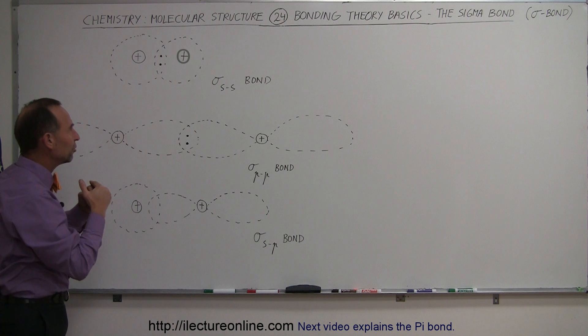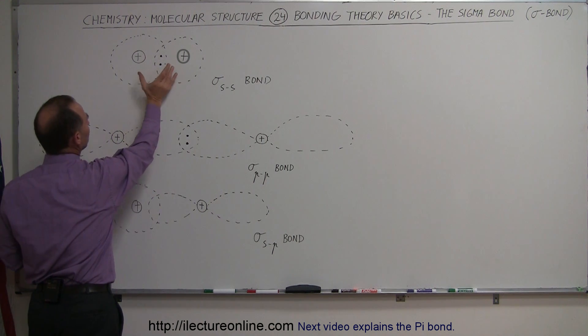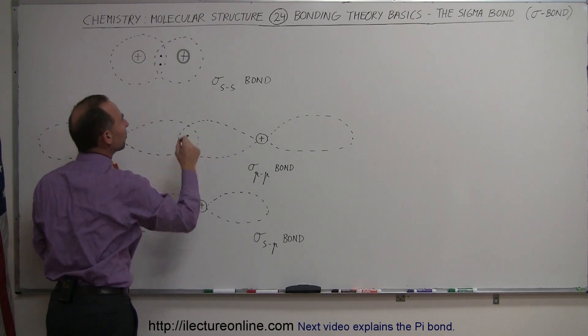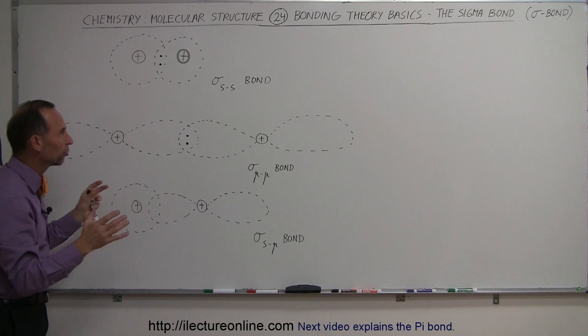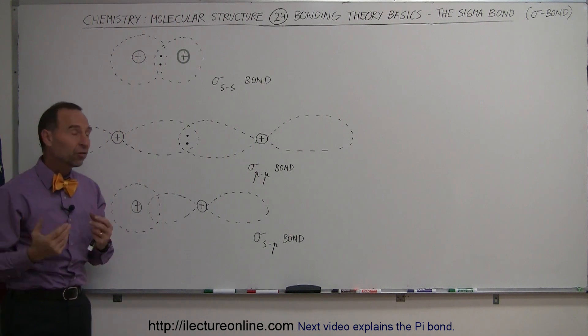Again, when they exist in that region and they're in phase, you can set them up in such a way that they attract the two nuclei, bringing the bond together. So in this case, we call that a sigma-ss bond because it's two s orbitals joining together, overlapping the region and creating that region where the two electrons can exist.